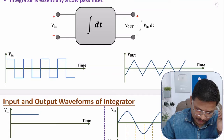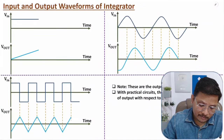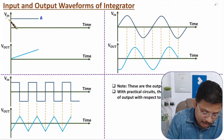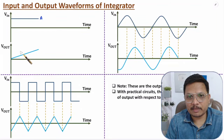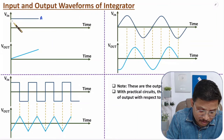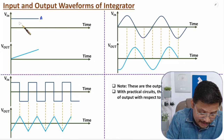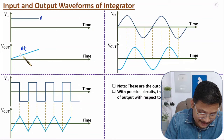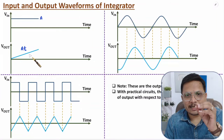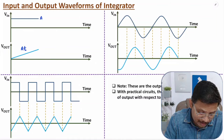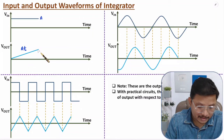Let me explain how. Here we have different inputs. First, I will consider a DC signal input with DC amplitude A. After integration of the constant A, the output will be A into T, which is a ramp signal. So if a DC signal input is given, then the output will be a positive ramp signal.